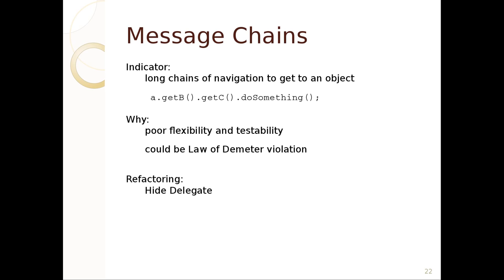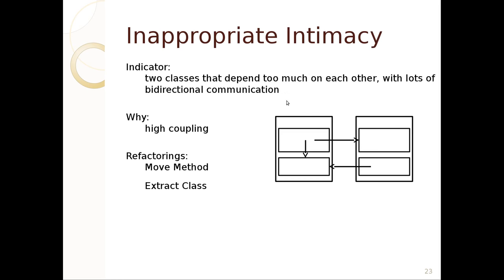Another problem is message chains — basically long chains of navigation to get to an object, like a.getB().getC().doSomething(). The problem is anything along this chain can throw a NullPointerException, and we won't know which one did it. It's not flexible, not testable, and it requires that A knows about C when maybe A just wants to do something and could just know B. What we can do is hide the delegate — have B cover up for C, so B has a method that calls c.doSomething() and then we don't have to know about C to get B to do something.